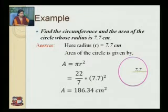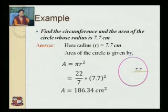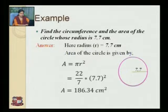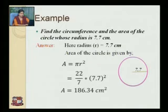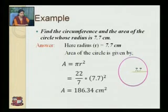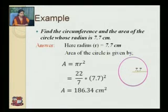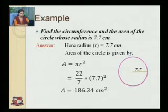Example: Find the circumference and the area of the circle whose radius is 7.7 cm. Here, radius is 7.7 cm. The area of circle is given by pi r squared, so using pi = 22/7, the area is (22/7) into 7.7 squared, which gives 186.34 cm squared. Therefore, the area of the given circle is 186.34 cm squared.